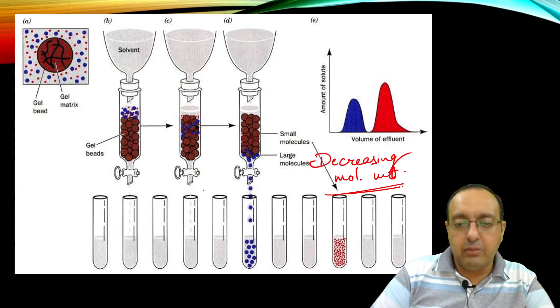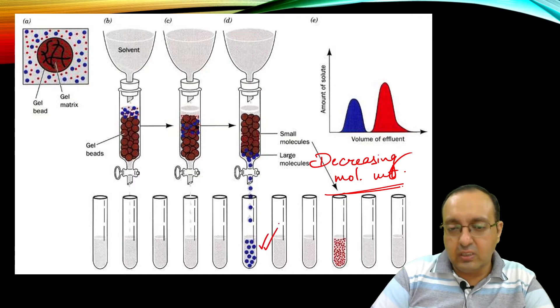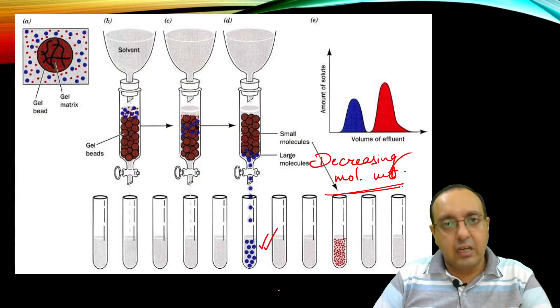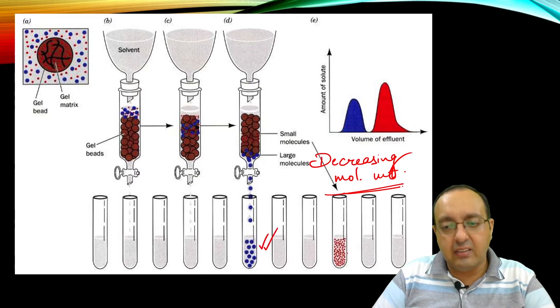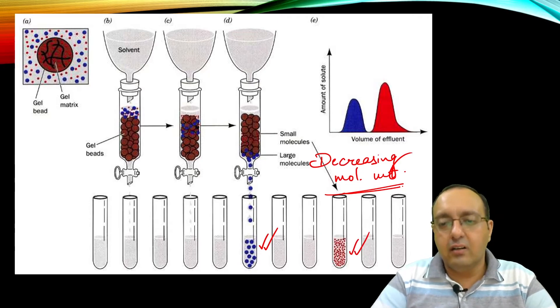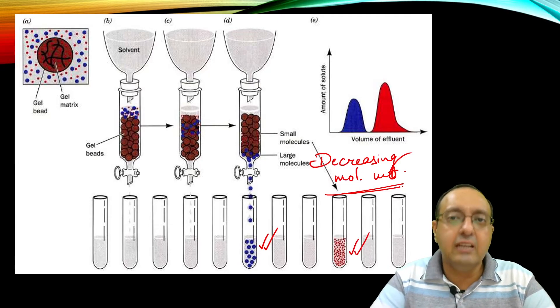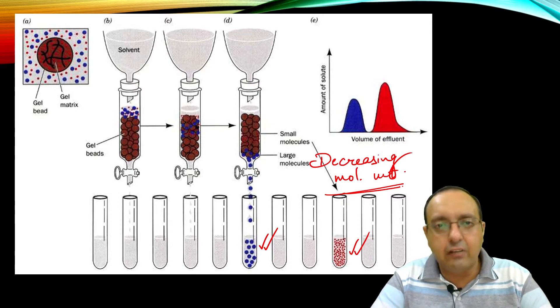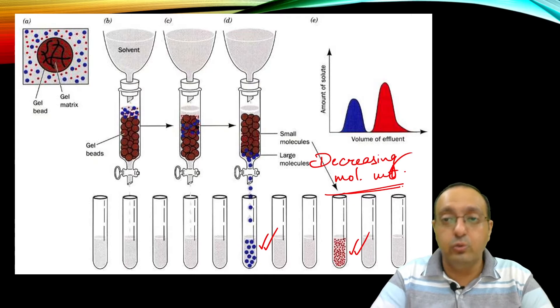This can be shown here using these blue beads, which represent large proteins, and these red particles, which represent small proteins. That's the technique for size exclusion chromatography—very easy to use.